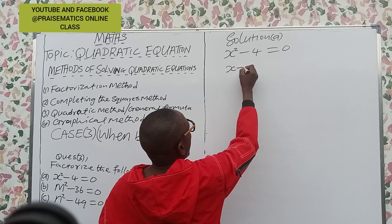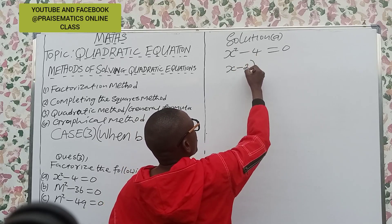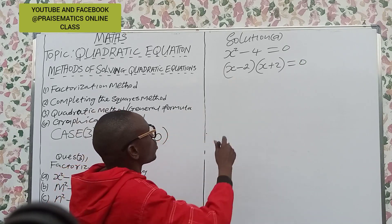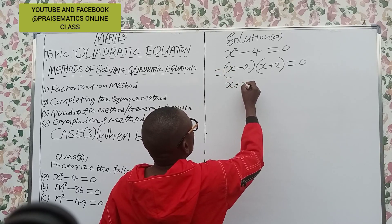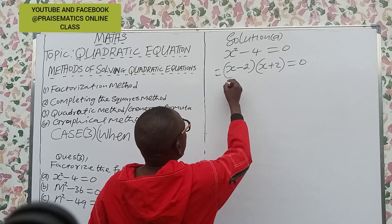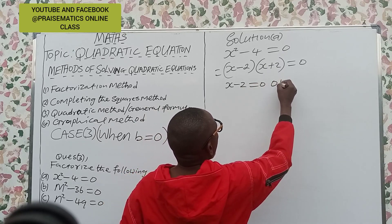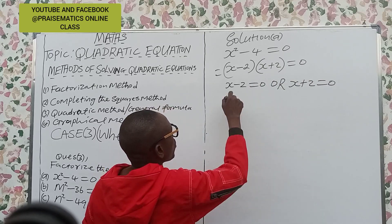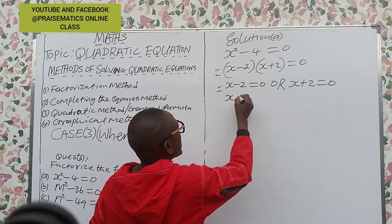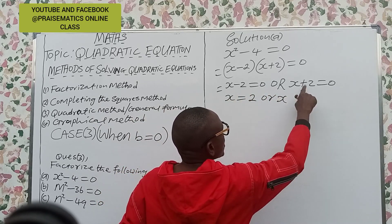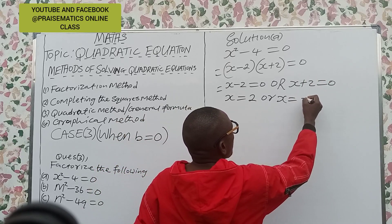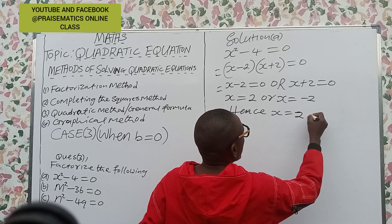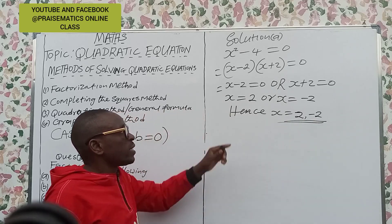So x² - 4 factors as (x - 2)(x + 2) = 0, using the difference of two squares. Finally we have (x + 2)(x - 2) = 0. Since the product of two numbers equals zero, each factor equals zero: x + 2 = 0 gives x = -2, and x - 2 = 0 gives x = 2. Hence x = 2 or x = -2, and that is the solution.